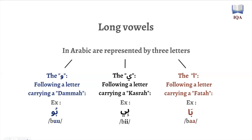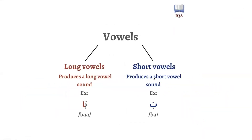These are how vowels function in the Arabic language. Short vowels are represented by harakat: the dhamma, the kasara, and the fatha — each representing their respective vowel, either a, u, or e. Long vowels are represented by three letters: the waw, the ya, and the alif, but only when they follow a letter carrying their respective short vowel. For the waw, it's a dhamma on the letter before it; for the ya, it's a kasara on the letter before it; and for the alif, the letter before it carries a fatha. This creates a long vowel.